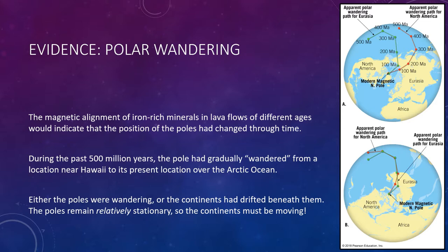Further evidence for continental drift came when a polar wandering path was constructed for North America. For the first 200 million years or so, the paths for North America and Europe were found to be very similar in direction, but separated by about 3,000 miles. Then, during the middle of the Mesozoic era 180 million years ago, they began to converge on the present North Pole. The explanation is that North America and Europe were joined until the Mesozoic era, when the Atlantic began to open up. When North America and Europe are moved back to their pre-drift positions, the paths of apparent polar wandering coincide — evidence that they were once joined and moved relative to the poles as part of the same continent.